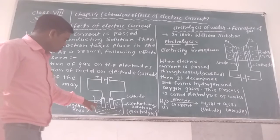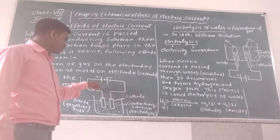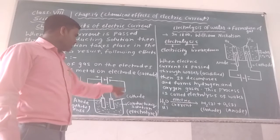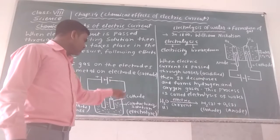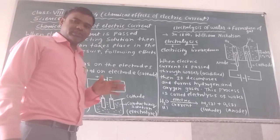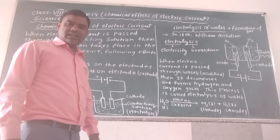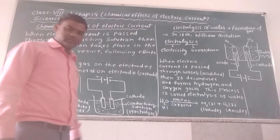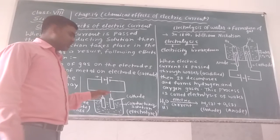Anode — here you can see that this graphite rod which is known as anode is connected with the positive terminal of the battery, and cathode is connected with the negative terminal of the battery. So the electrode which is connected with the positive terminal of the battery is known as anode, whereas the electrode which is connected with the negative terminal of the battery is known as cathode. So these two terms, anode and cathode, are clear.